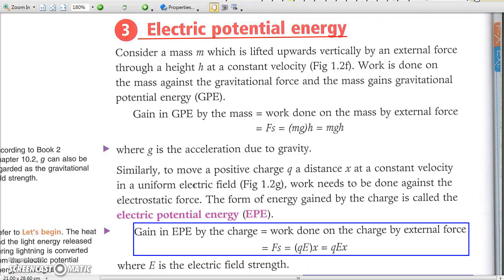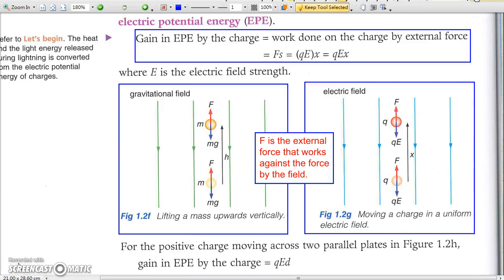Part 3: Electrical Potential Energy. When the charge is moved between two points inside an electric field with a potential difference, the charge will have a change of electrical potential energy given by W equals Fx equals QEx. The situation is similar to the case when we move a mass inside a gravitational field.